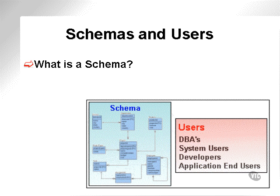Schemas and users. What is a schema? A schema is a schematic. A user is a user using the schematic, either directly or indirectly. In Oracle, a schema and a user are actually the same thing. However, the schema is used as a central repository or area to store table structures and data. Users can be multiple users looking at a single schema, such as DBAs, system users, developers, and application end users, amongst others.